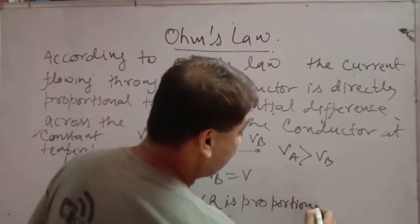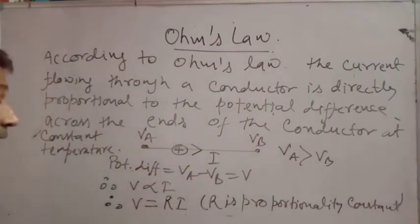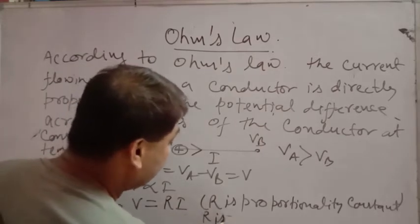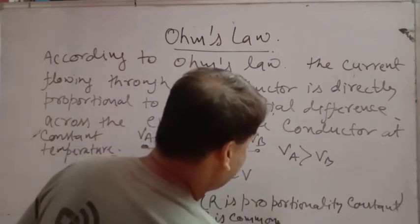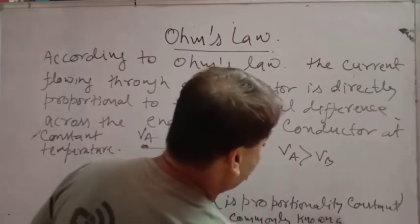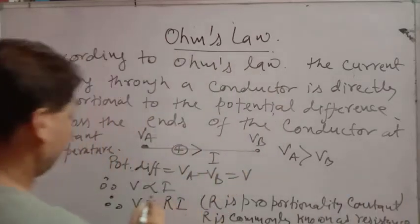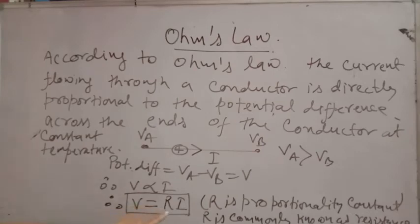This proportionality constant R is commonly known as resistance. So our final relation is: V equals R times I, where V is the potential difference, R is the resistance (the proportionality constant), and I is the current. This is Ohm's Law.